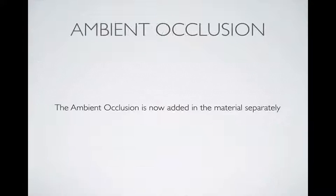Ambient occlusion has its own separate input in the material, so you just bring it in and assign it as a separate map, as opposed to baking it into your diffuse in Photoshop.